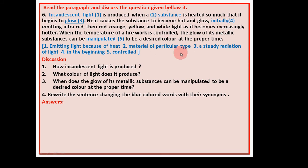Initially means at the beginning. Glow, that means steady radiation of light. And manipulated means controlled. Understand these words. I think you easily understand with the help of this meaning. You try to understand this paragraph.